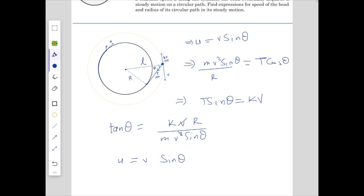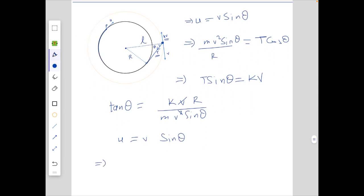So substituting V equals U by sine theta above, we get tan theta equals KR over MU. From here the velocity V will be equals to KR over M multiplied by 1 by tan theta which is MU by KR by sine theta.